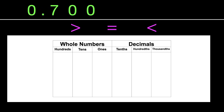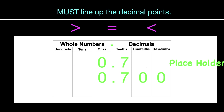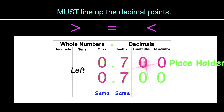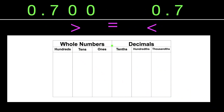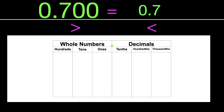Let's try another one: seven hundred thousandths and seven tenths. When you first look at this, most people would think the 700 is a lot bigger. But let's line up our decimals, put in our placeholders, and see how it looks. Working from left to right — ones are the same, tenths are equal, hundredths are equal, and thousandths are equal too. That means these two numbers, believe it or not, are actually equal. We would read that as: seven hundred thousandths is equivalent — in other words, equal to — seven tenths.